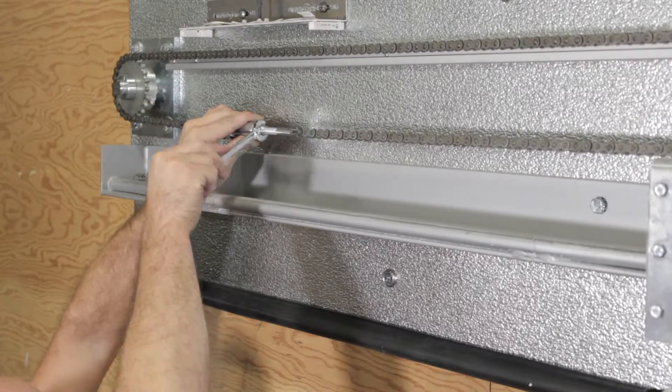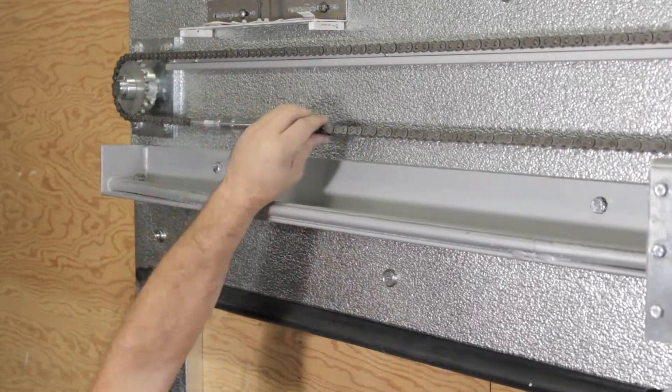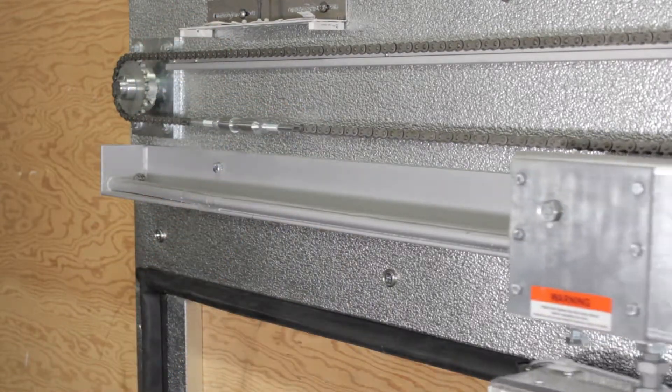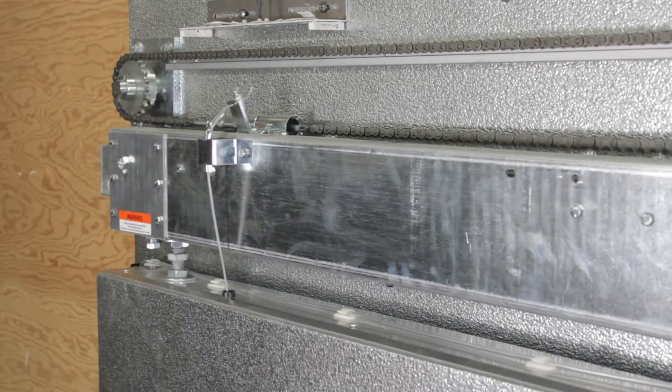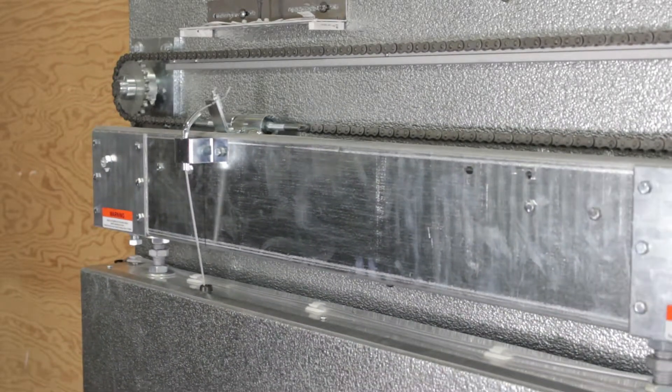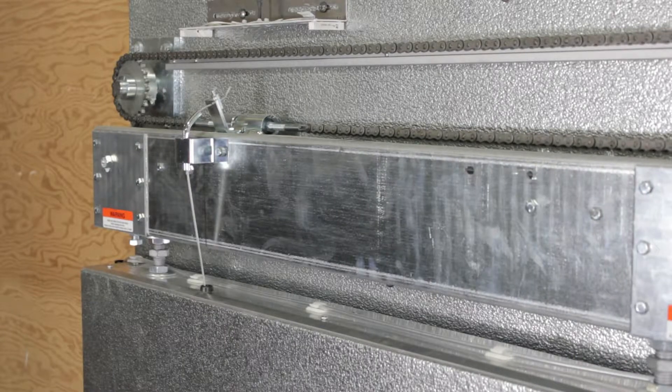To reconnect the door to the chain, move the door sideways until the door catches and free movement stops. The drive chain bullet will automatically engage the release latch when the drive release tube and the bullet align.